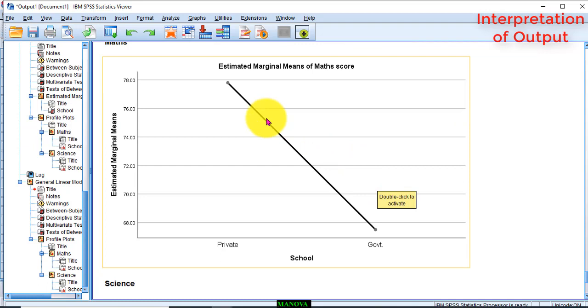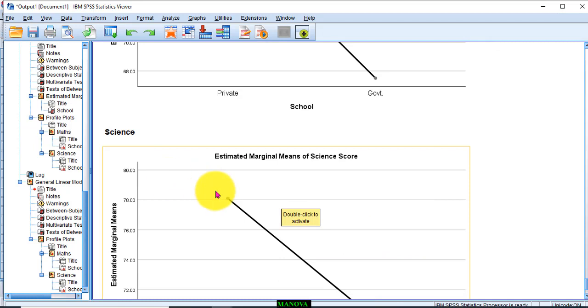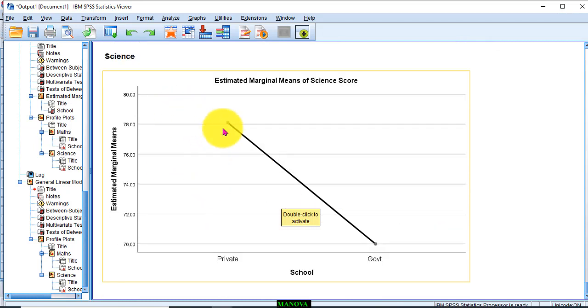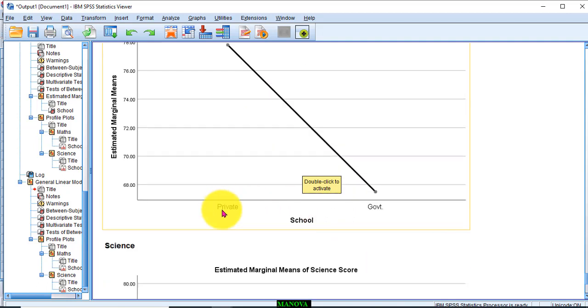This is the plot of significant mean differences in math score across private and government schools. Similarly, in the science score across private and government schools. You can see that there is a huge variation between the mean scores of science and maths across private and government schools.